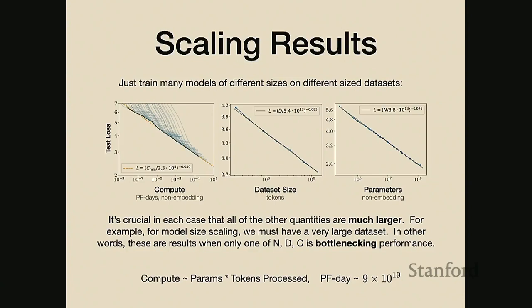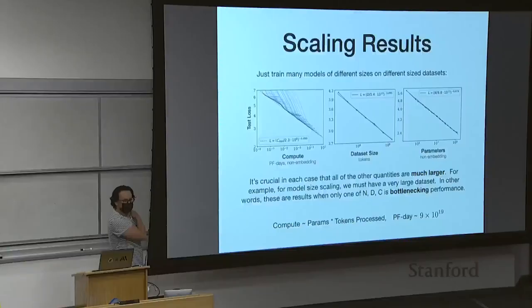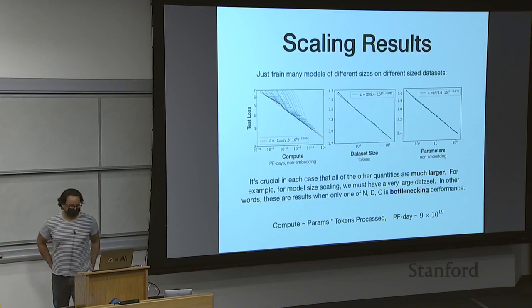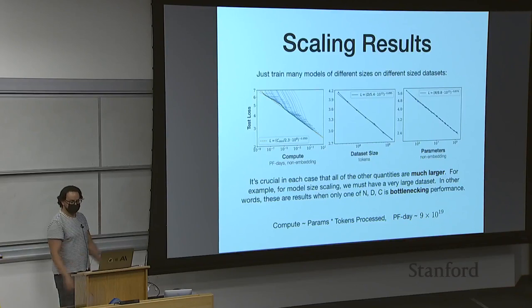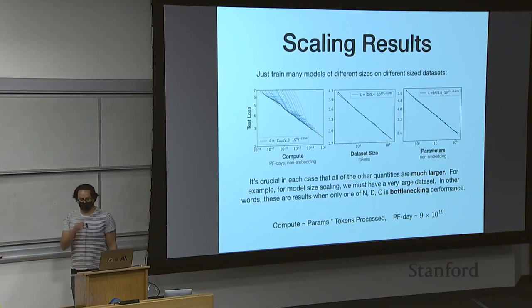[Q&A] On the axes: there's a minus sign in the exponent. Looking at the bottom axes on the right - it's just a log scale plot. The x-axis on the compute plot uses petaflop-day units, which is why it's actually a small number.